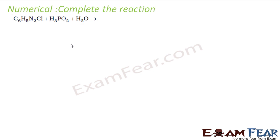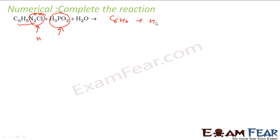The next reaction: C6H5N2Cl — diazonium salt — reacts with H3PO2. This N2Cl will be replaced with hydrogen. H3PO2 is a reducing acid; it gets oxidized to H3PO3. What you get is C6H6, benzene. H3PO2 gets oxidized to H3PO3, the diazonium salt is reduced, HCl is released, and nitrogen gas goes off. So reacting a diazonium salt with ethanol or H3PO2 replaces N2Cl with hydrogen.